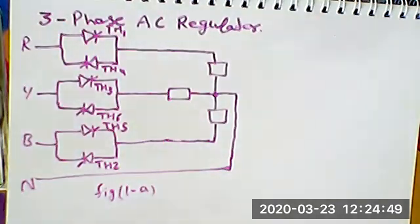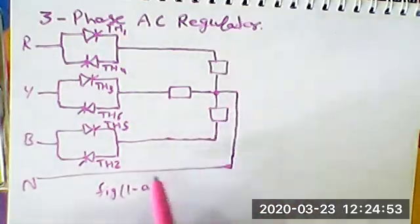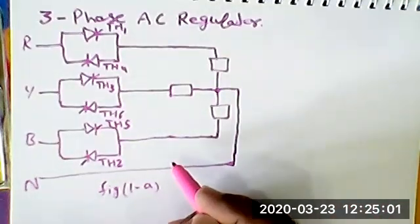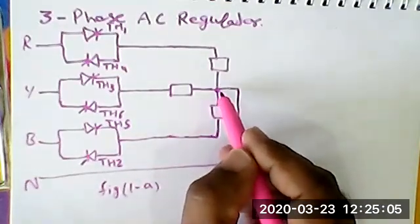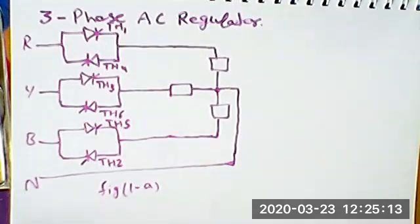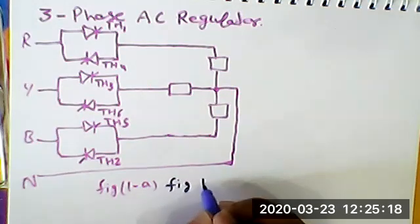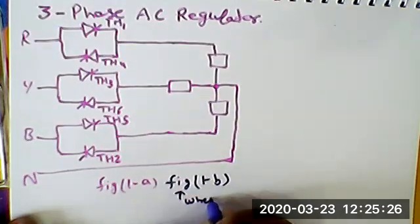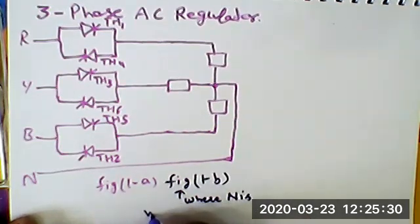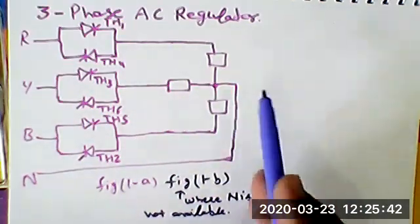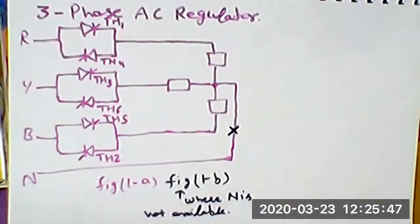This is the case when load neutral is available to the user. It may be possible you don't have this neutral point — meaning the neutral is not available. Then this will become Figure 1B, where N is not available. The rest of the circuit is the same but this N is not available. That is the second configuration.